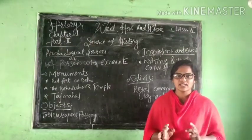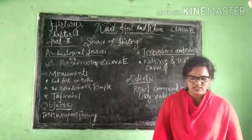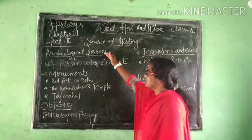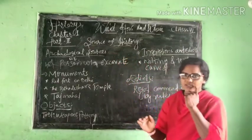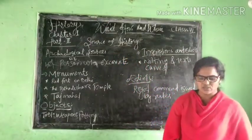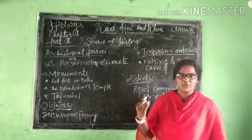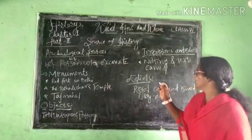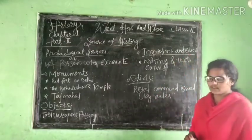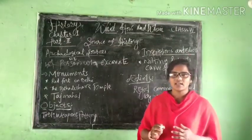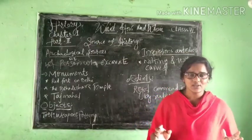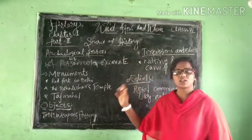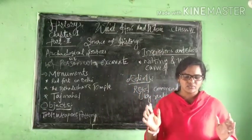Archaeological sources and literary sources. Today we are going to study about archaeological sources. Under the topic of archaeological sources, there are monuments, objects, inscription and edicts, coins, and burial sites. All of these we are going to study under the sub-topic of archaeological sources for the study of history.